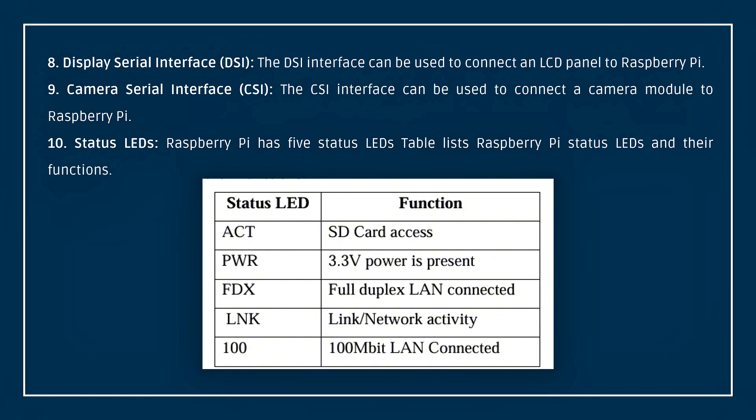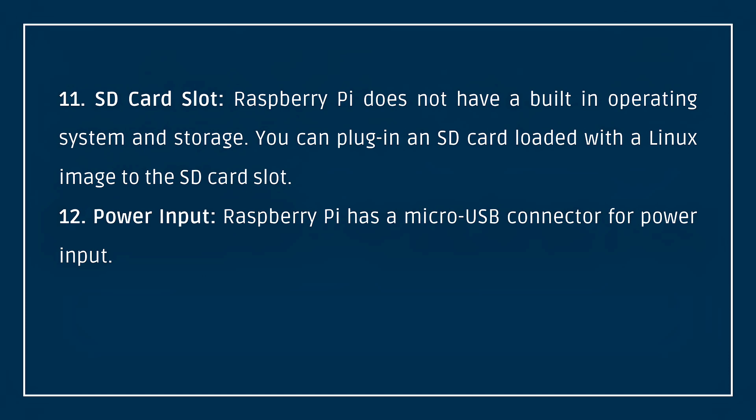The first LED is ACT — SD Card Access indicator. Then PWR, FDX, LNK, and 100, etc. Next, SD Card Slot. Raspberry Pi does not have built-in storage or operating system; so we plug in an SD card into the SD card slot to provide both storage and the OS.